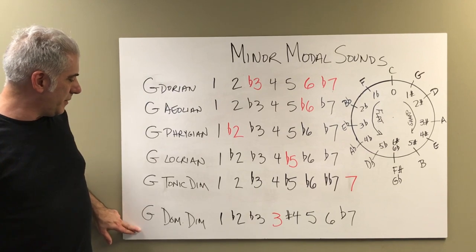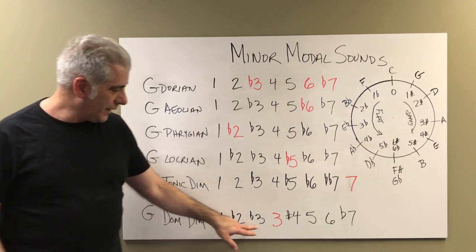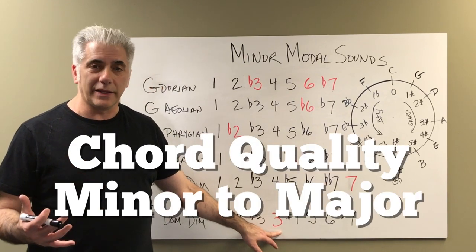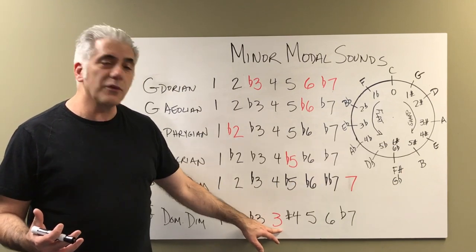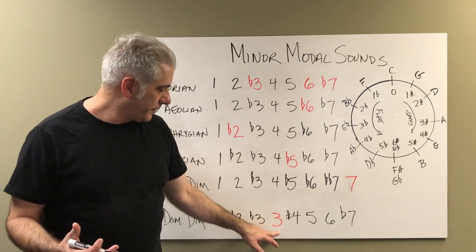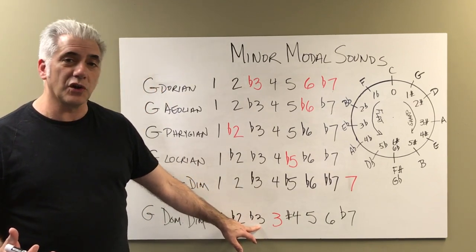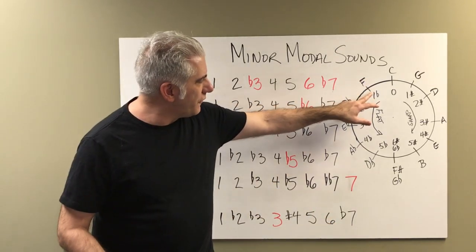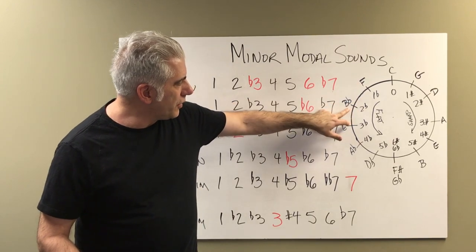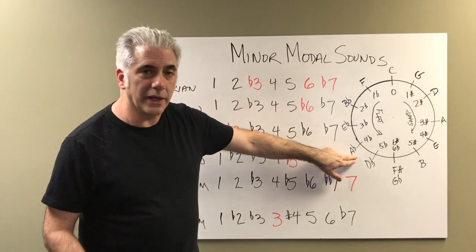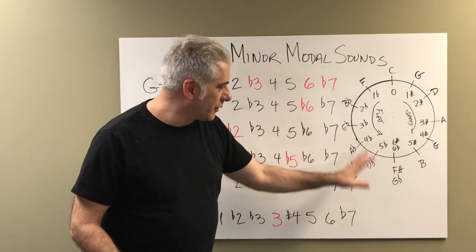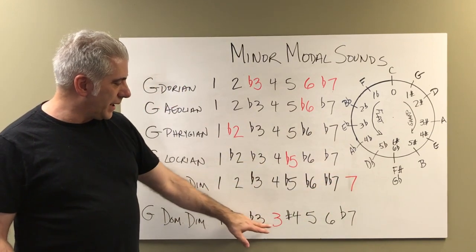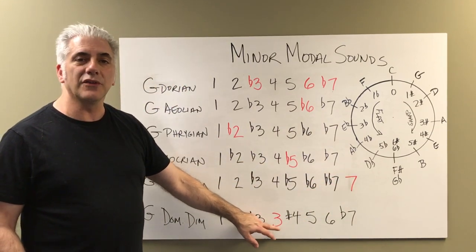Then we get the G dominant diminished, which is a half-step whole-step scale. It has a flat third, and it has a natural third too. So we've made a change in the chord quality here at the end because I want to resolve to C major — so I've added the leading tone in here. We still have the flat third though, which has really become the sharp nine, plus natural six and flat seven. By adding this leading tone, it's going to bring us into the C major sound.